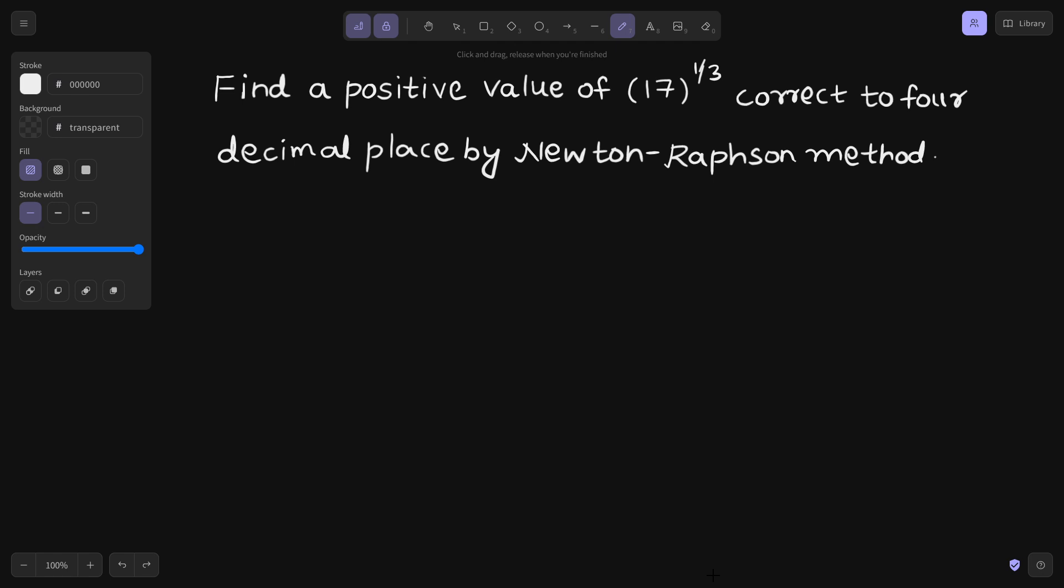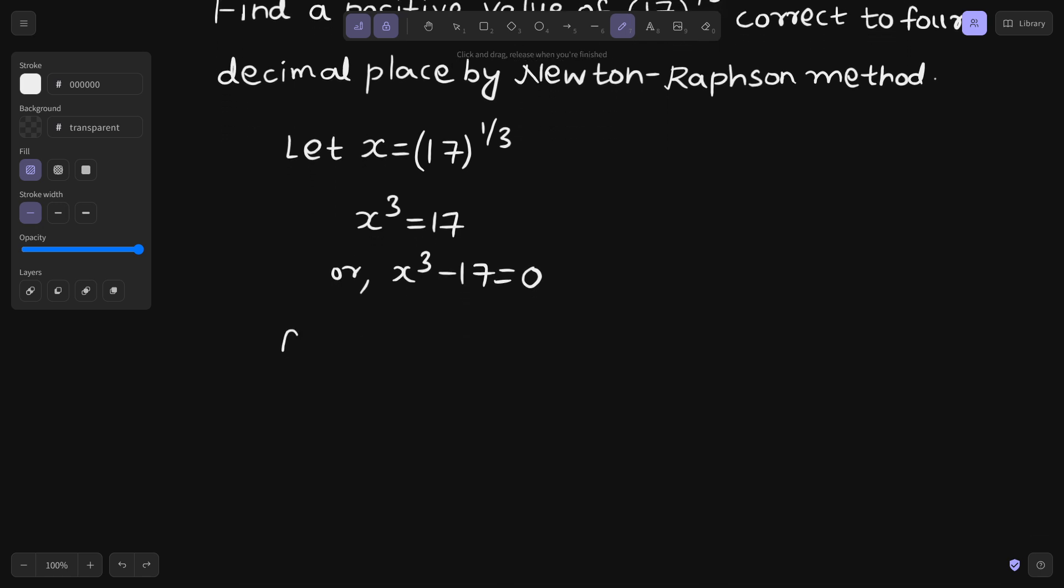Because the equation is not given, we can assume x to be equal to cube root of 17. If we cube both sides we will get x cube equals to 17 or x cube minus 17 equals to 0. So if we want to write our function that would simply be equal to x cube minus 17 and the derivative of this function will be 3x square.